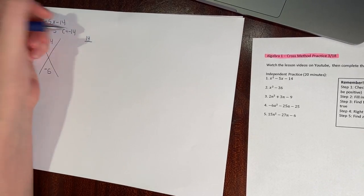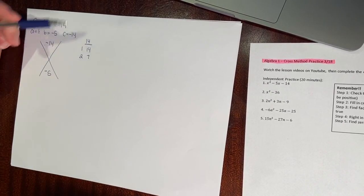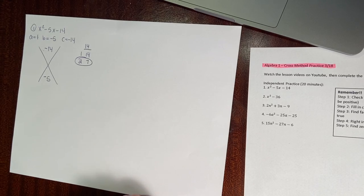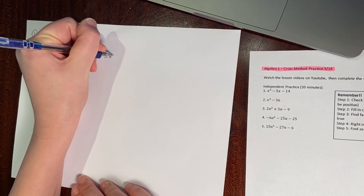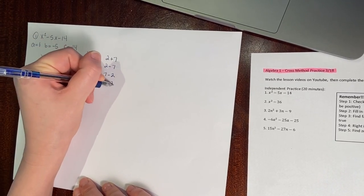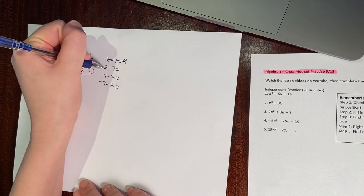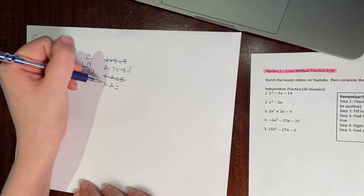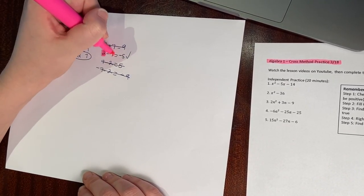I'm going to think of all my factors for 14: 1 and 14, 2 and 7. I'll think about which is most reasonable to get to 5. 1 and 14 will never get me to 5, so it has to be 2 and 7. Now I have to figure out the sign. 2 plus 7 is 9 — out. 2 minus 7 is negative 5 — that works. 7 minus 2 is positive 5 — doesn't work. Negative 7 minus 2 is negative 9 — doesn't work. So my signs are positive 2 and negative 7.